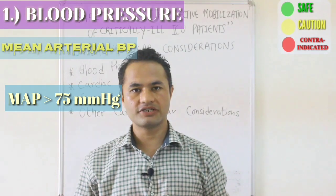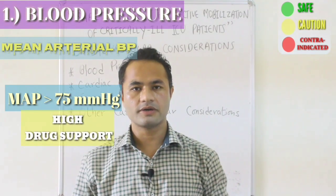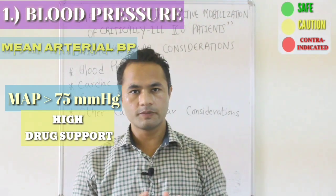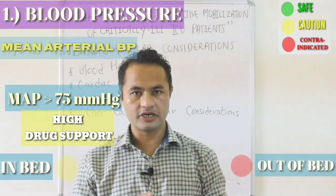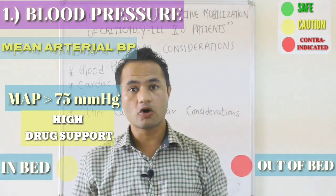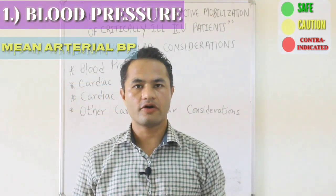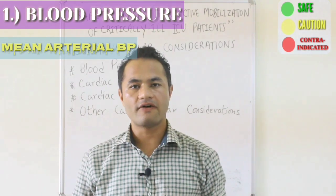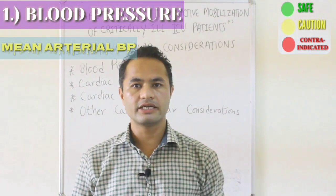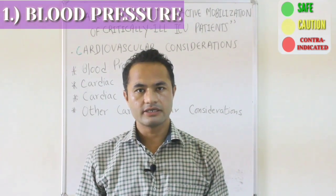Patients receiving high level support but whose MAP is greater than the lower limit should be mobilized within the bed under supervision but are strictly contraindicated to mobilize out of the bed. The level of pharmacological support — low, moderate, or high — is decided by the medical team only.